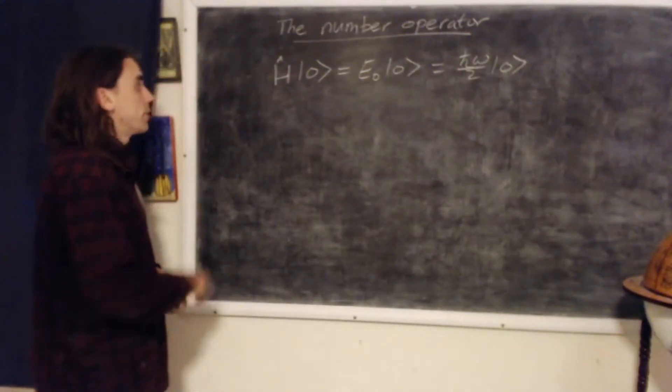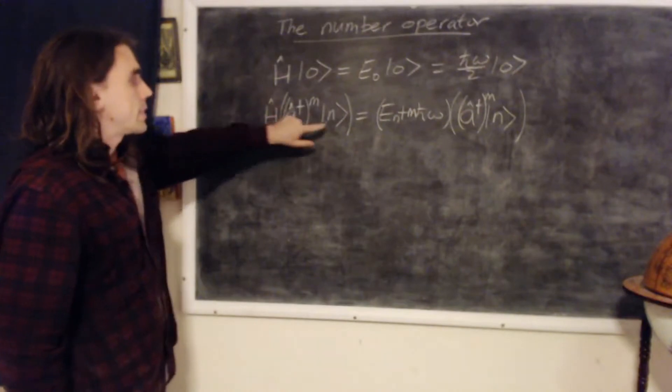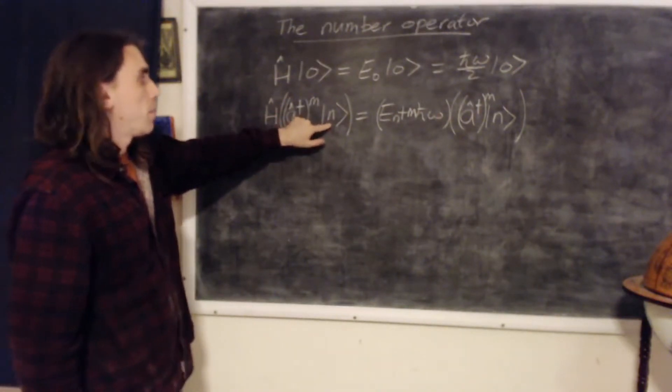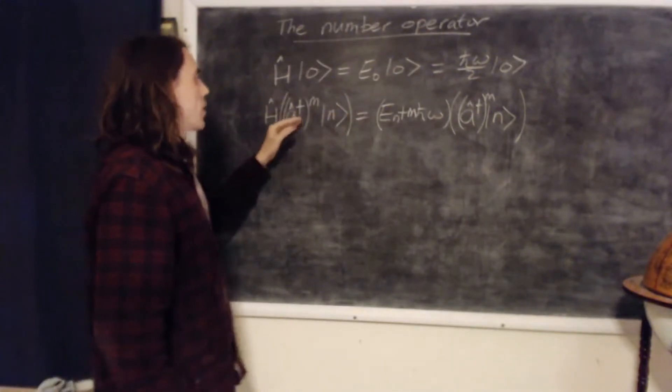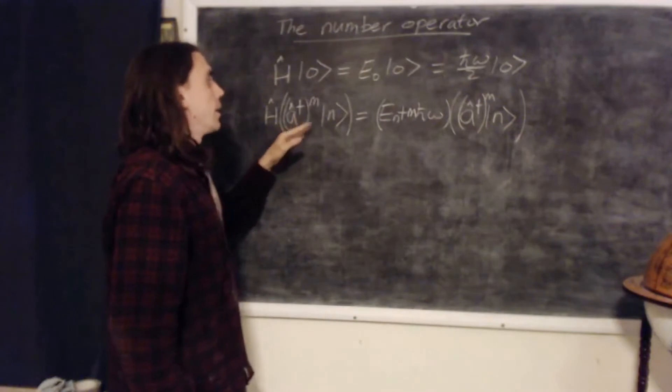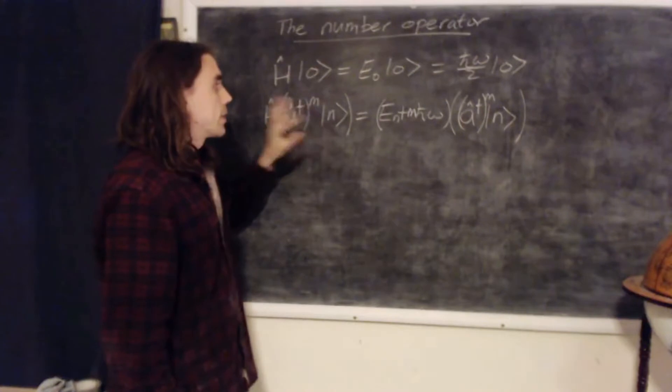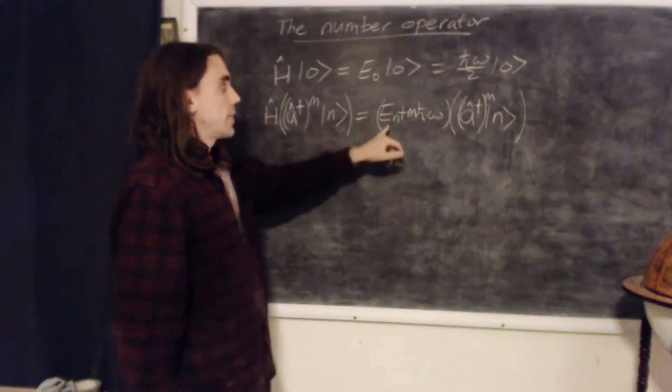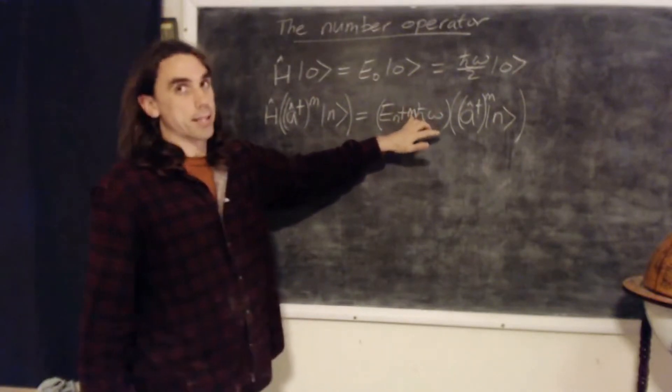We also found that for any state n which solves the time-independent Schrödinger equation with energy eigenvalue E n, if we act the raising operator a dagger m times, where m is just a positive integer, it's nothing to do with the mass, onto n, then we get another eigenstate of the system which has energy E n plus m h bar omega, again m being the integer.